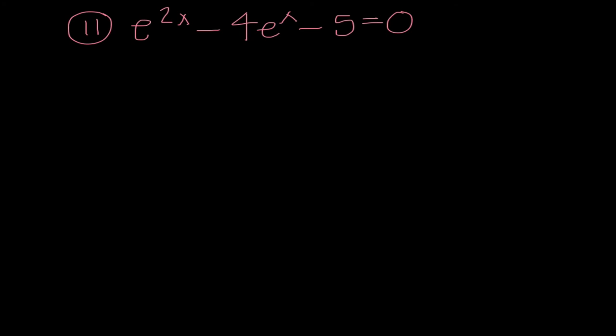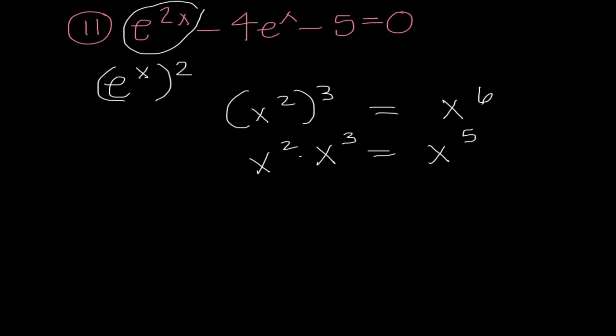I want to remind us of some basic algebra skills. If I had something like X squared cubed versus X squared times X cubed, I know when I'm taking an exponent to a power, we multiply. When I am multiplying things that have the same base, I add their exponents. So, what that means for me, this E to the 2X power is like E to the X squared. Because, X times 2 is 2X. So, this is actually something that is factorable.